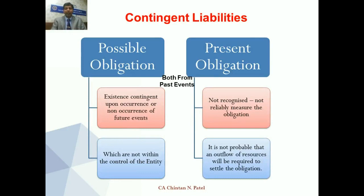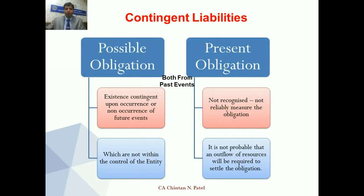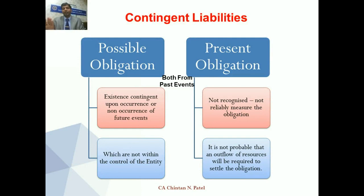This chart summarizes the whole framework. If it is a possible obligation — where occurrence or non-occurrence depends on future events not wholly within the control of the entity — or a present obligation where outflow is not probable or the amount cannot be reliably estimated, then it is a contingent liability. Whenever in practice the question arises whether to make a provision or disclose a contingent liability, go through these conditions. If present obligation exists but either condition is missing, it is a contingent liability; if it is only a possible obligation, it is outside the recognition requirement from books of accounts.